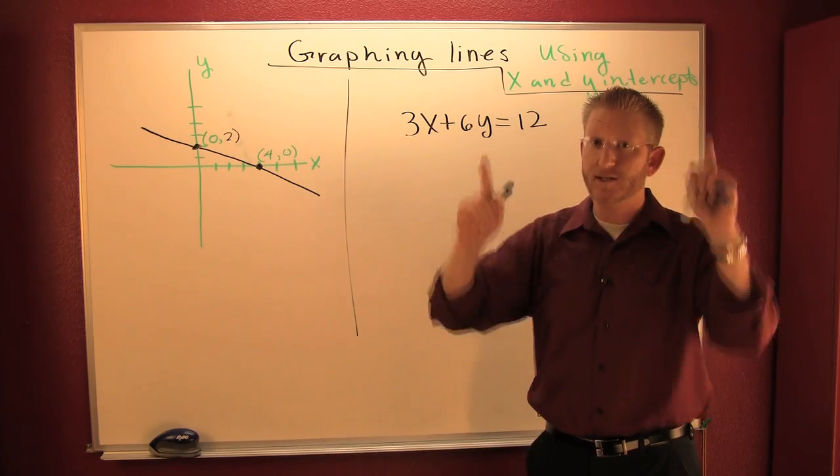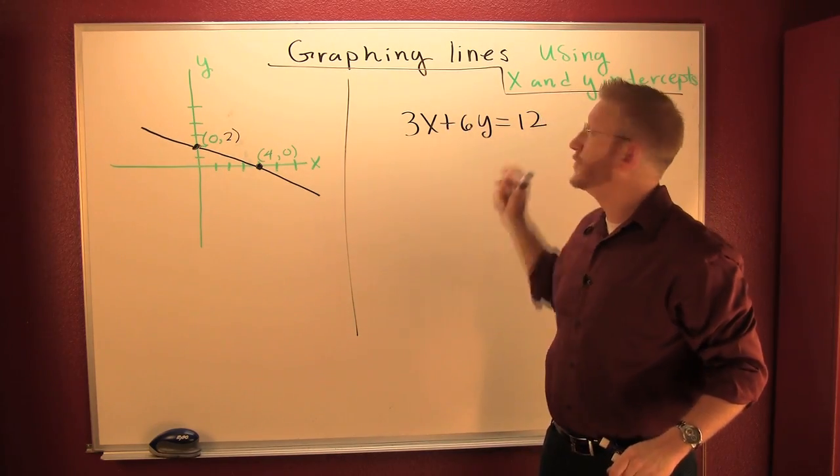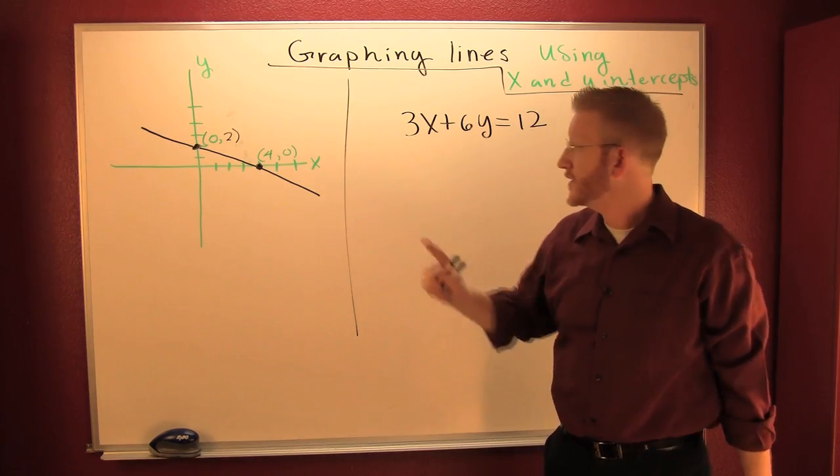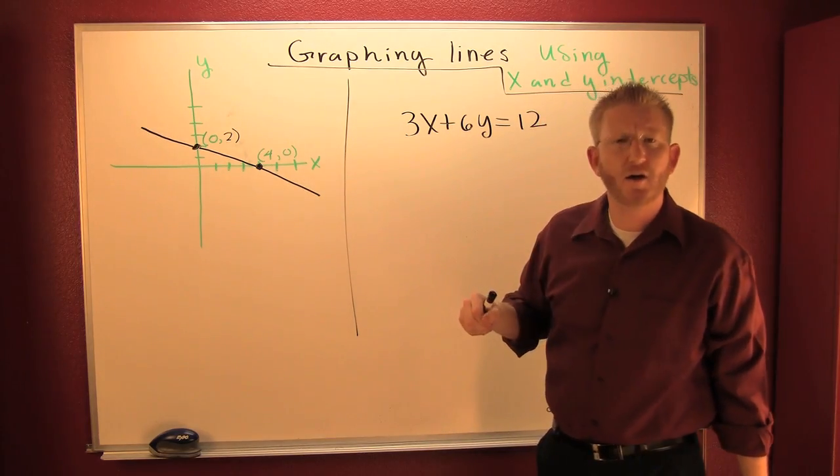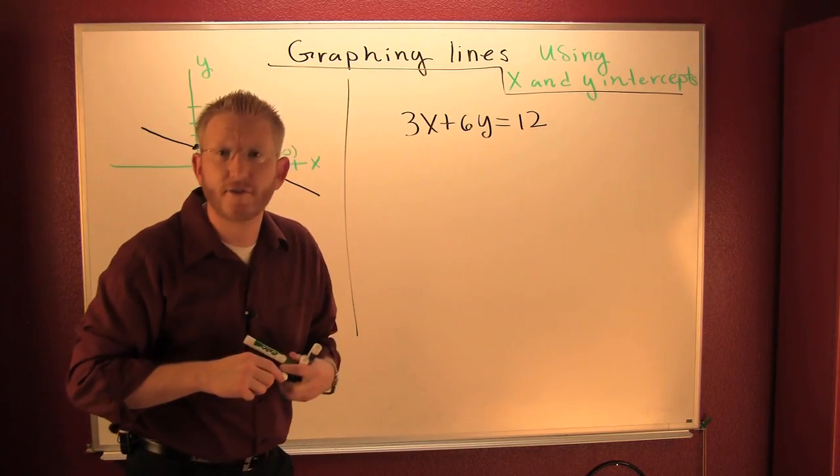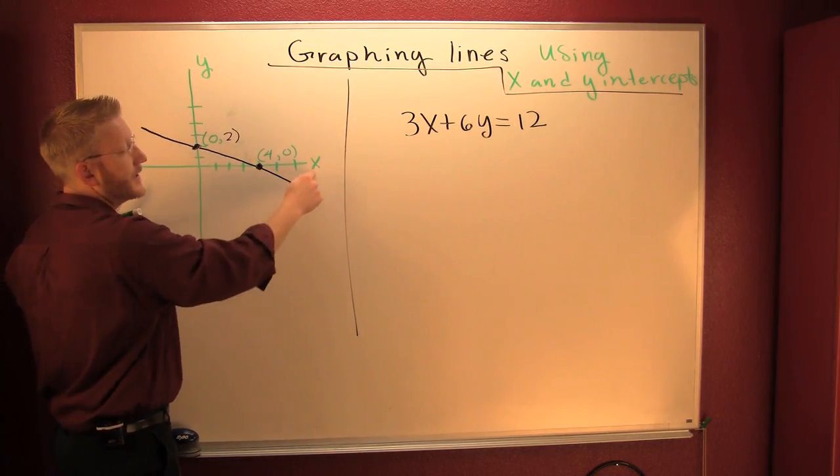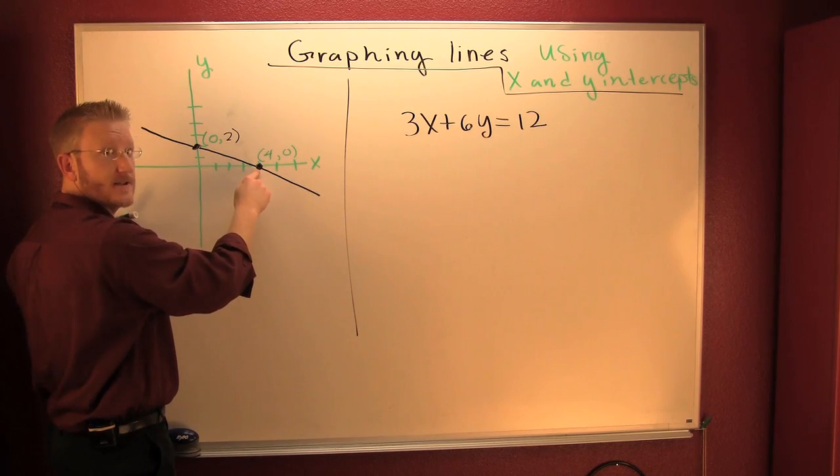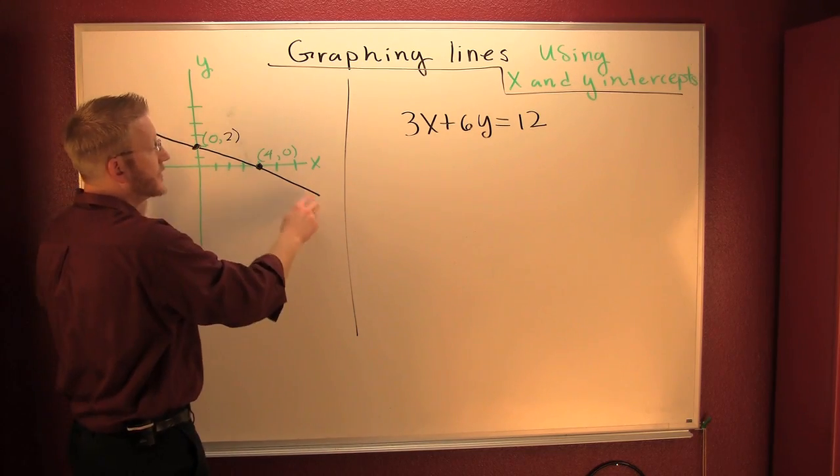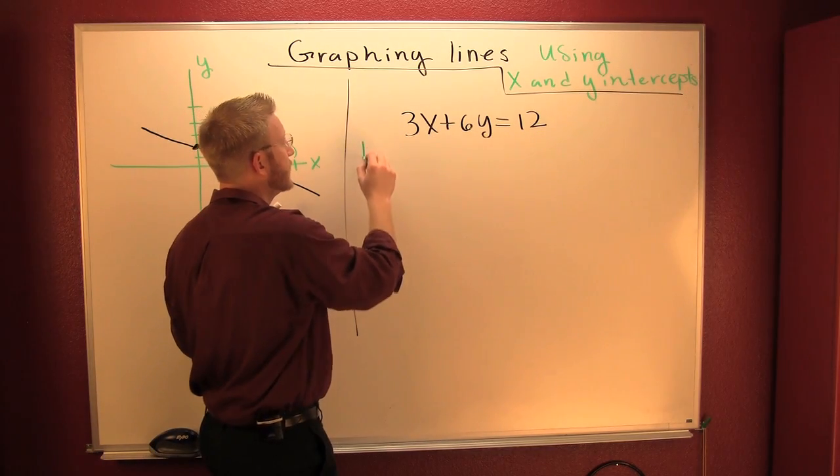If you see something like this, it is begging you to graph by using the x and y intercepts. So like we did over there on our picture, if I was going to try to find the x intercept, I would let y be 0. And I'm going to do that right here.